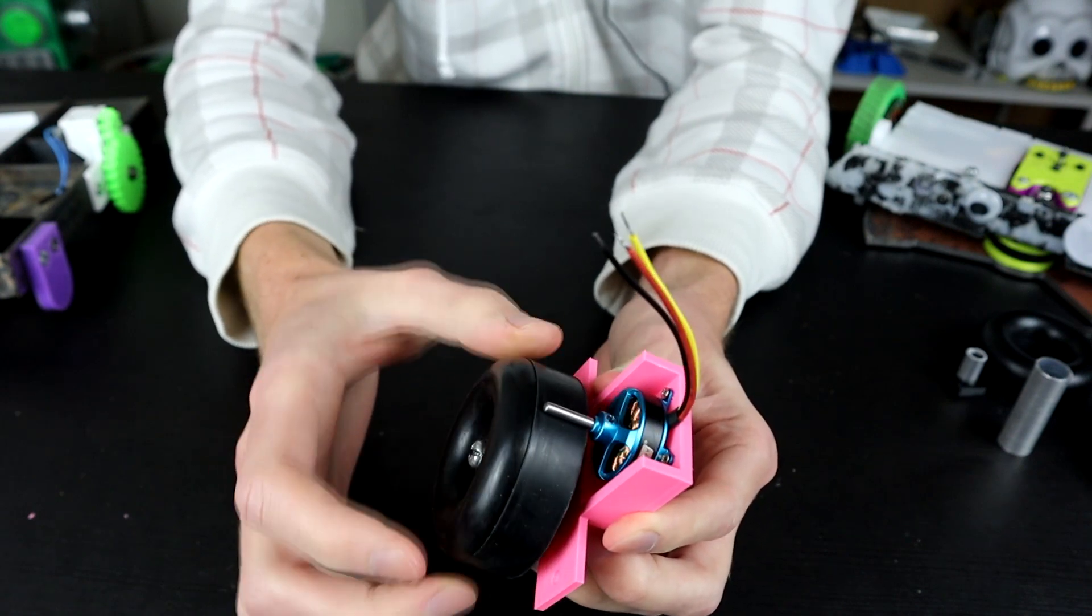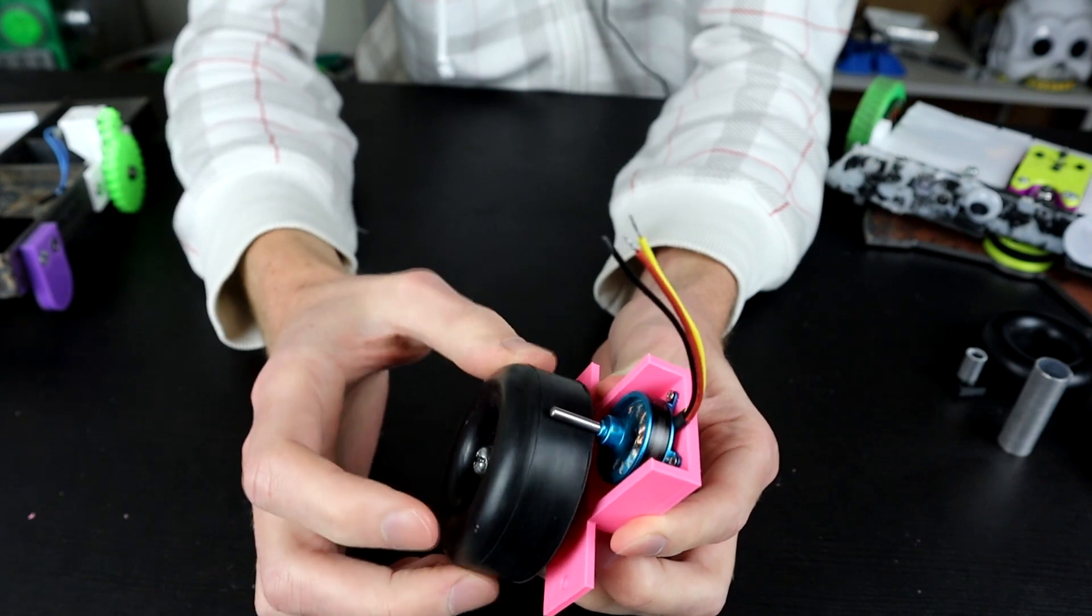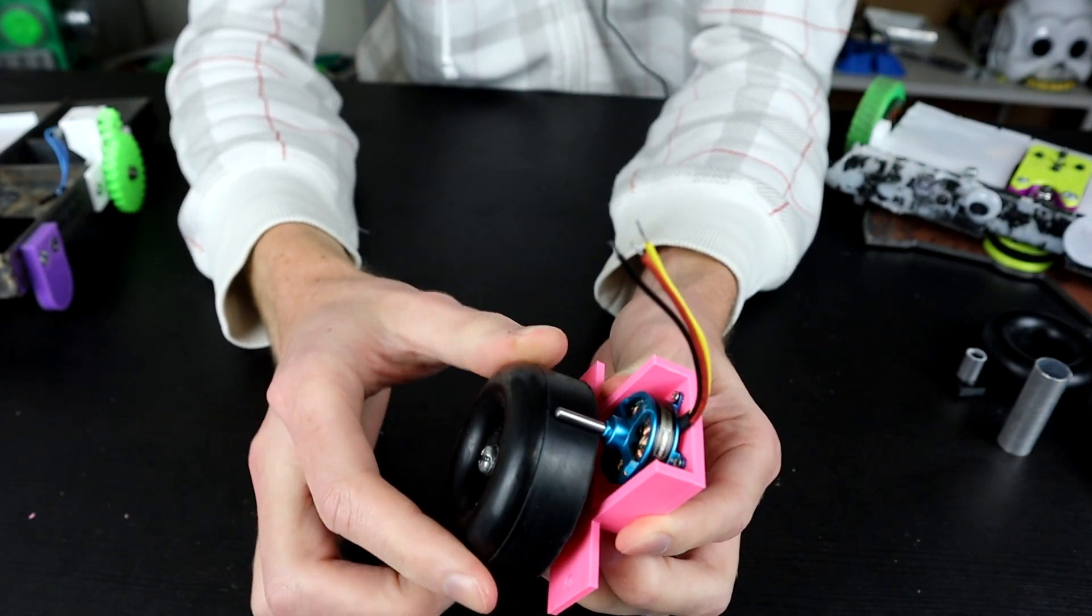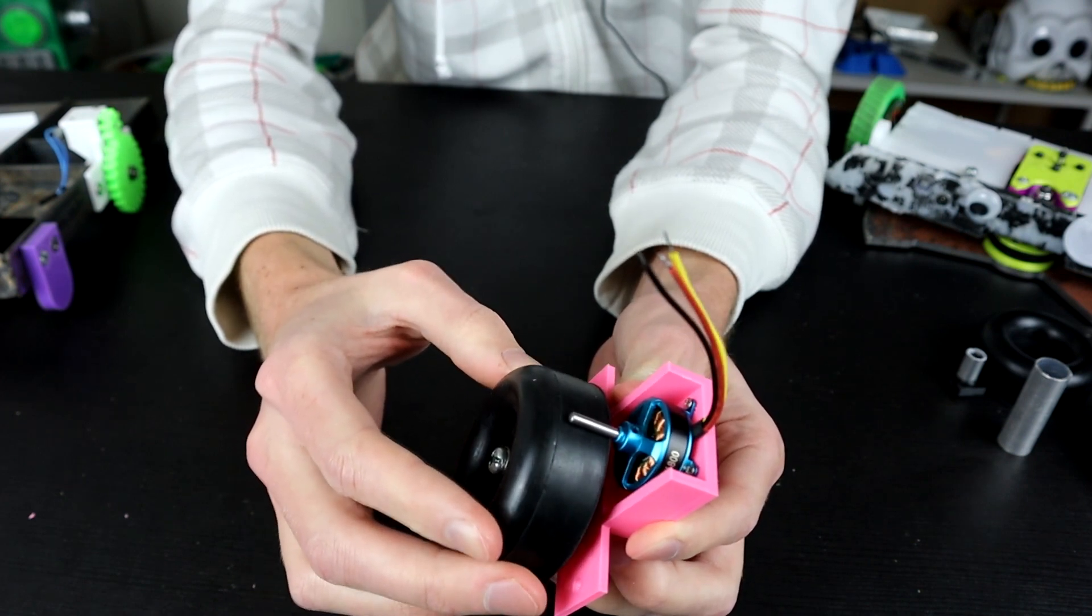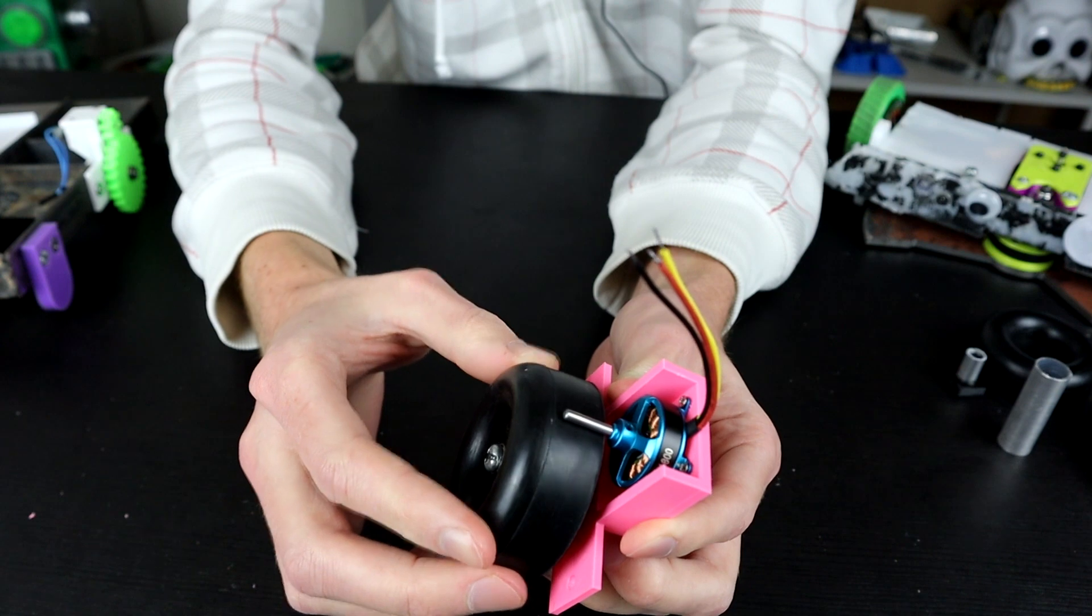So you can see that as I turn this wheel around, I do in fact get the motor turning. But every now and again, I get a hitch where there's a dead point, like right there, where the motor stops moving. And that is a bad thing in combat.